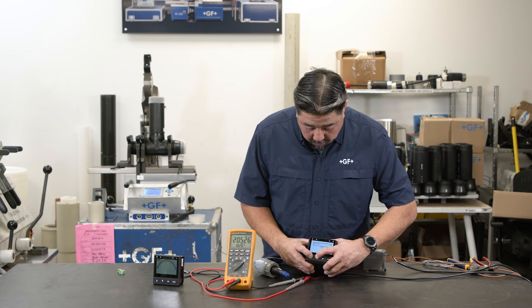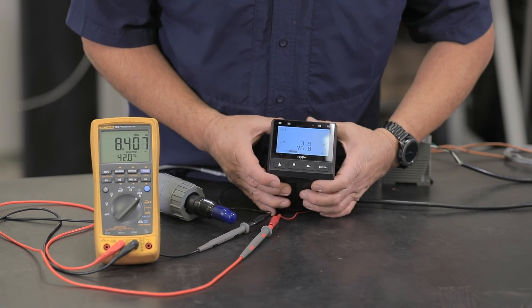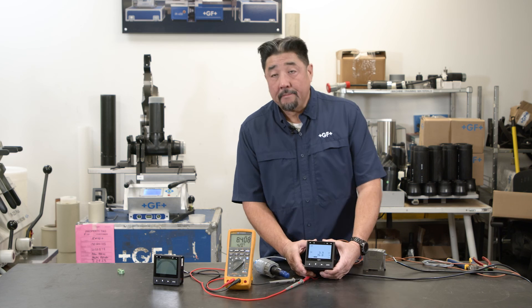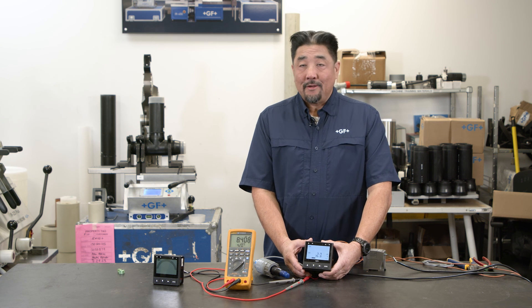Okay, so let's see where we're at. 3.9 pH. I'm showing about 8.4 milliamps, and that's wiring and configuring your 9950. Thank you.